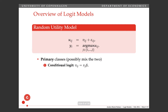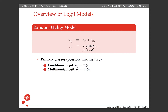The two classes are: conditional logit, which looks like x_j beta, and multinomial logit, which is x_i beta_j. The primary difference is that in conditional logit, x varies over the alternatives — the cars — so you can think of horsepower, car price, and weight — while betas are constant.